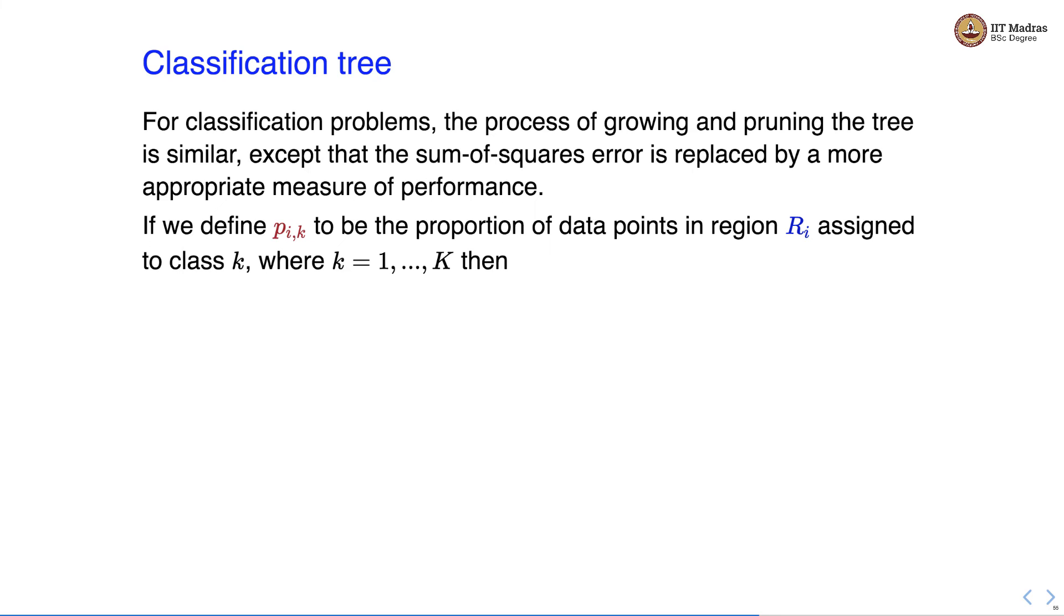except that the sum of squared error is replaced by a more appropriate measure of performance. So here we define pik just like we define in case of ID3 and pik is the probability of class k in region i.